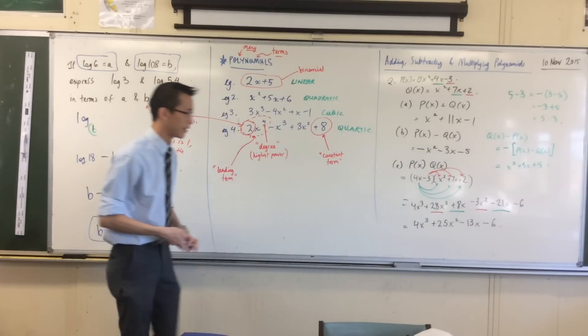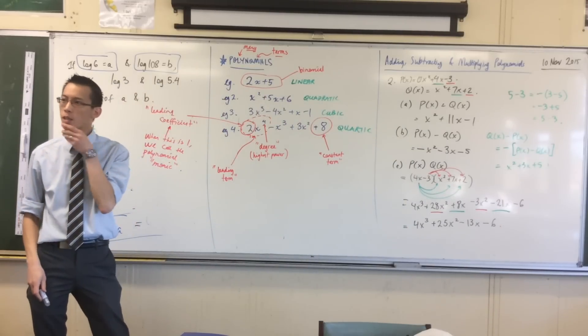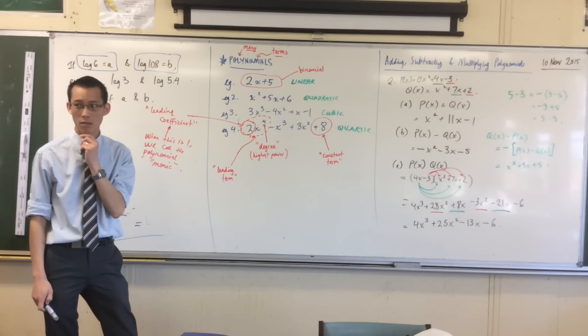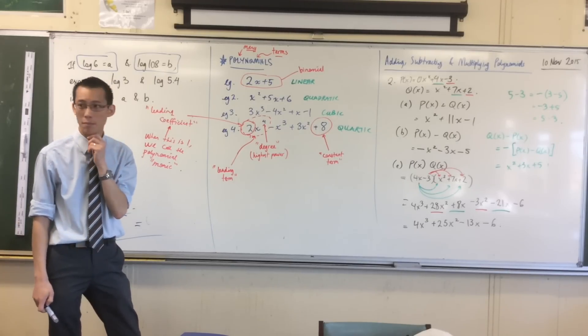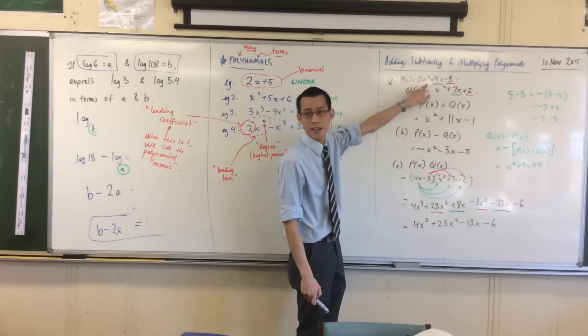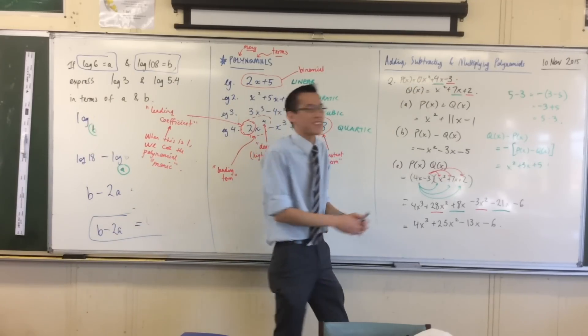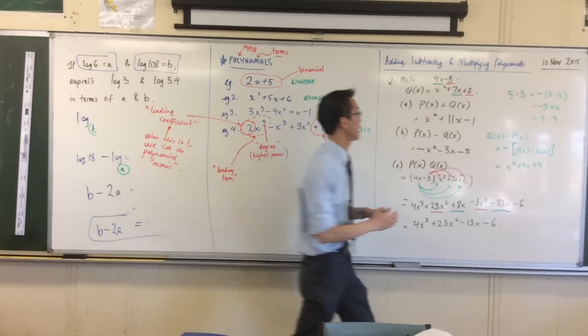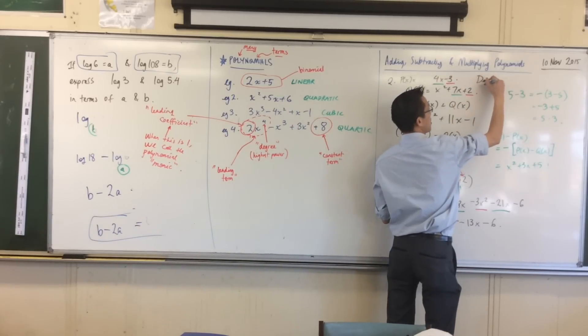Now, really quickly, I just want to point out to you. What was the degree of our first polynomial? What was the degree of P? The degree of P was just 1. Remember, I added in 0x squared, but there aren't really any x squared terms there. So the degree is 1. Let me just quickly write that. Degree 1.